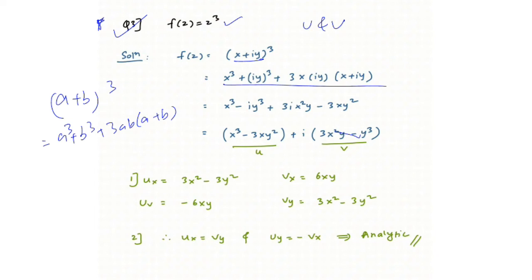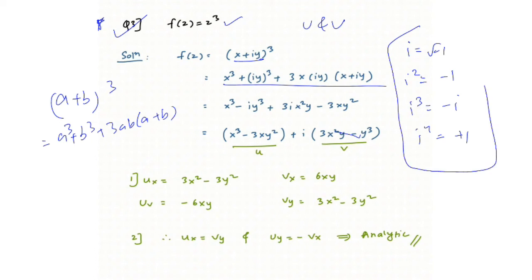You get: x³ + (iy)³ + 3·x·(iy)·(x + iy). Opening the bracket and substituting powers of i, the real part u = x³ − 3xy² and the imaginary part v = 3x²y − y³. Now compute uₓ, u_y, vₓ, v_y.